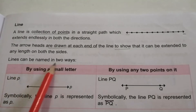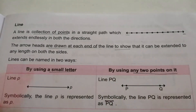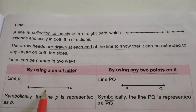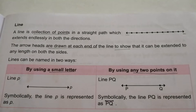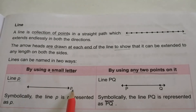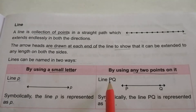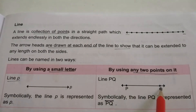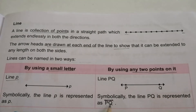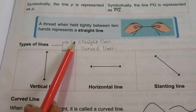Lines can be named in two ways: by using a small letter, or by using any two points on it. For example, a line named with a small letter p is represented symbolically as p with a double-arrow above it. A line through points P and Q is named line PQ, written as PQ with a double-arrow above the letters.